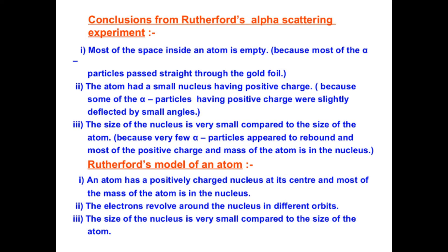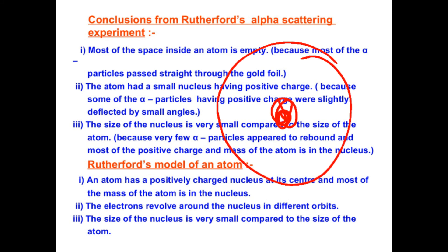These conclusions propose what the model of an atom could be. Rutherford defined that the atom has a positively charged nucleus at its center. He called this place the nucleus. The negative charge is revolving outside the nucleus, and the size of the nucleus is very small compared to the size of the whole atom.